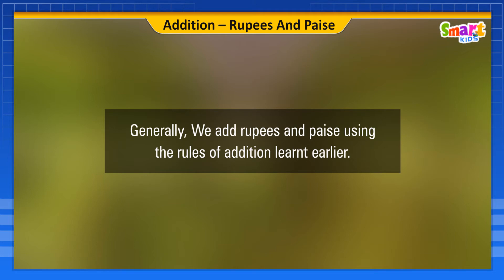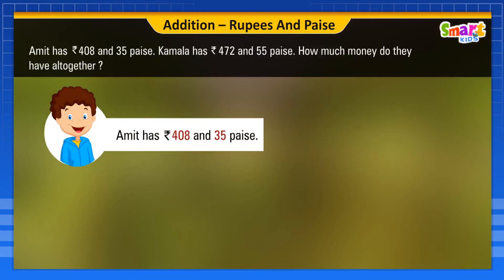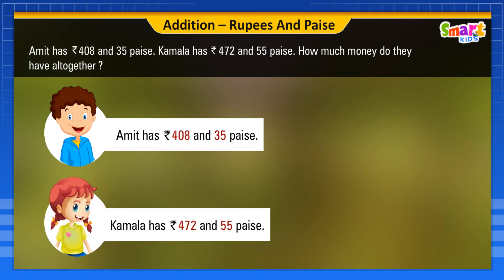Let us see an example. Aamit has 408 Rupees and 35 Paise. Kamala has 472 Rupees and 55 Paise. How much money do they have altogether?